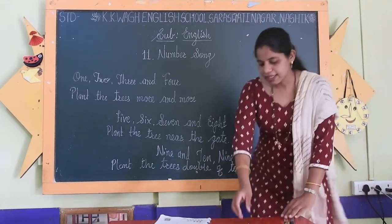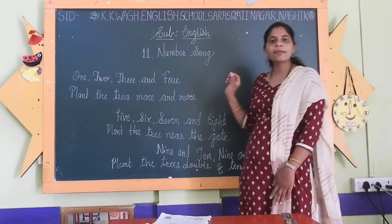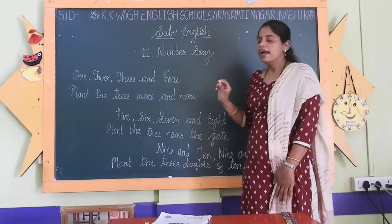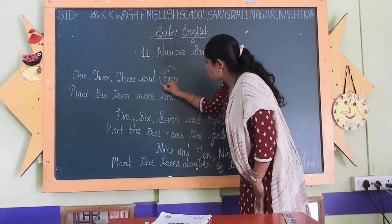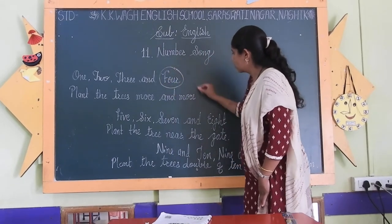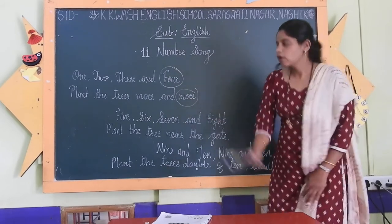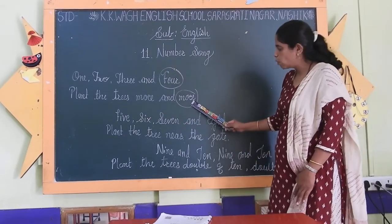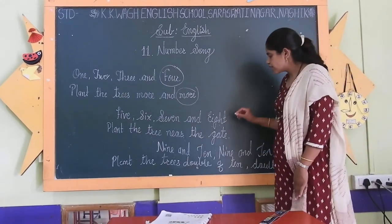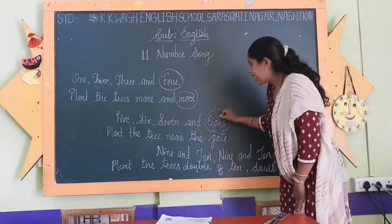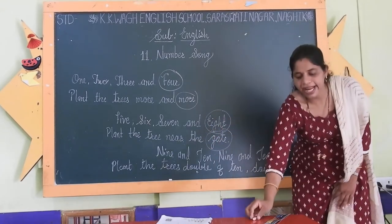Now we will see the rhyming words. Which rhyming words came in this poem? The first pair is 4 and more. The second pair is 8 and gate.